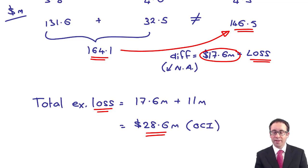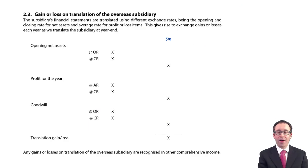And that total loss will go through OCI, your other comprehensive income. There we go. That looks quite complicated. I think it is. It can be quite tricky.